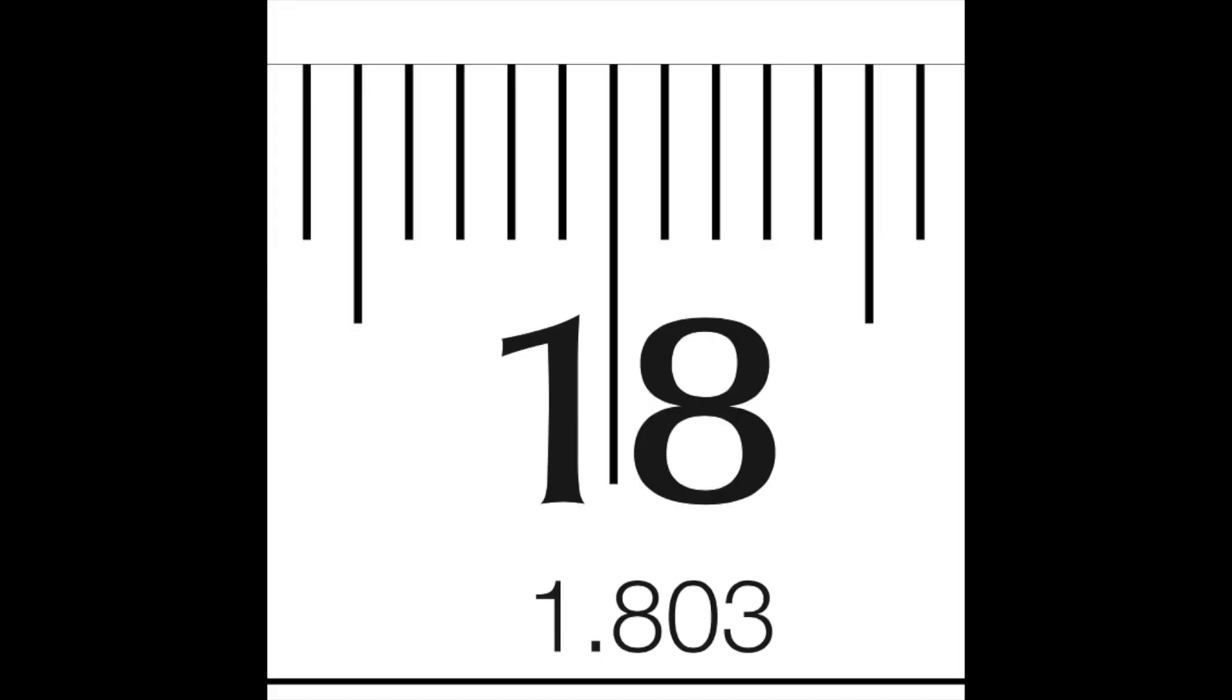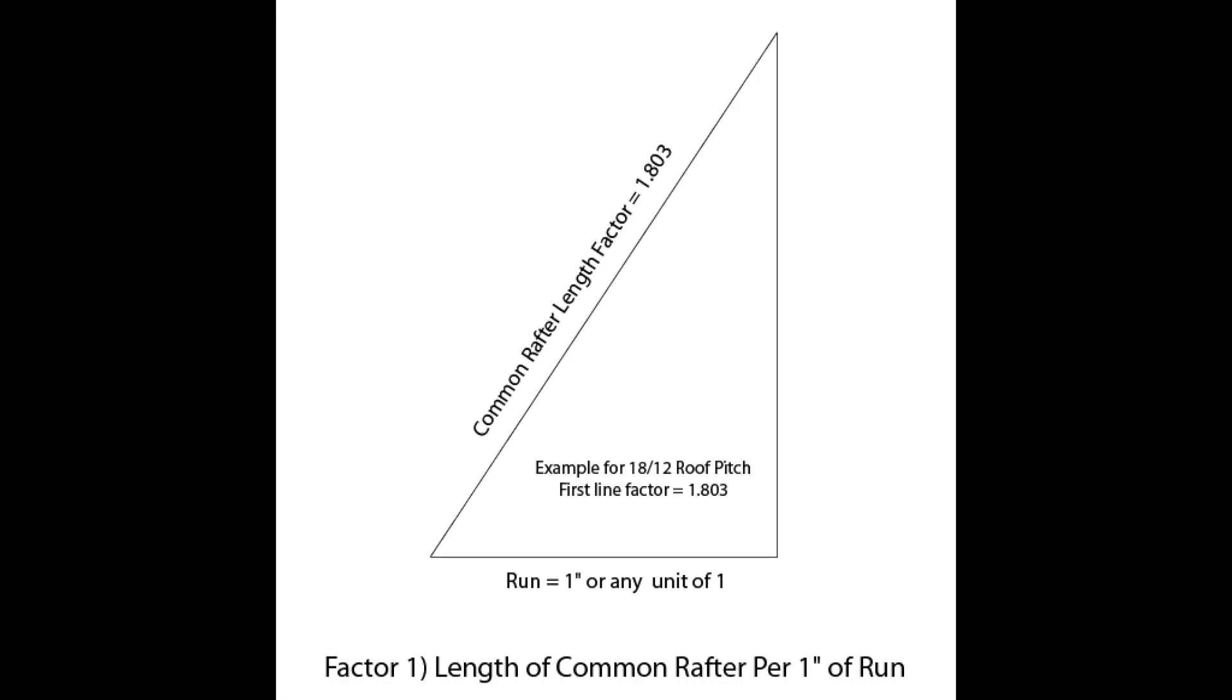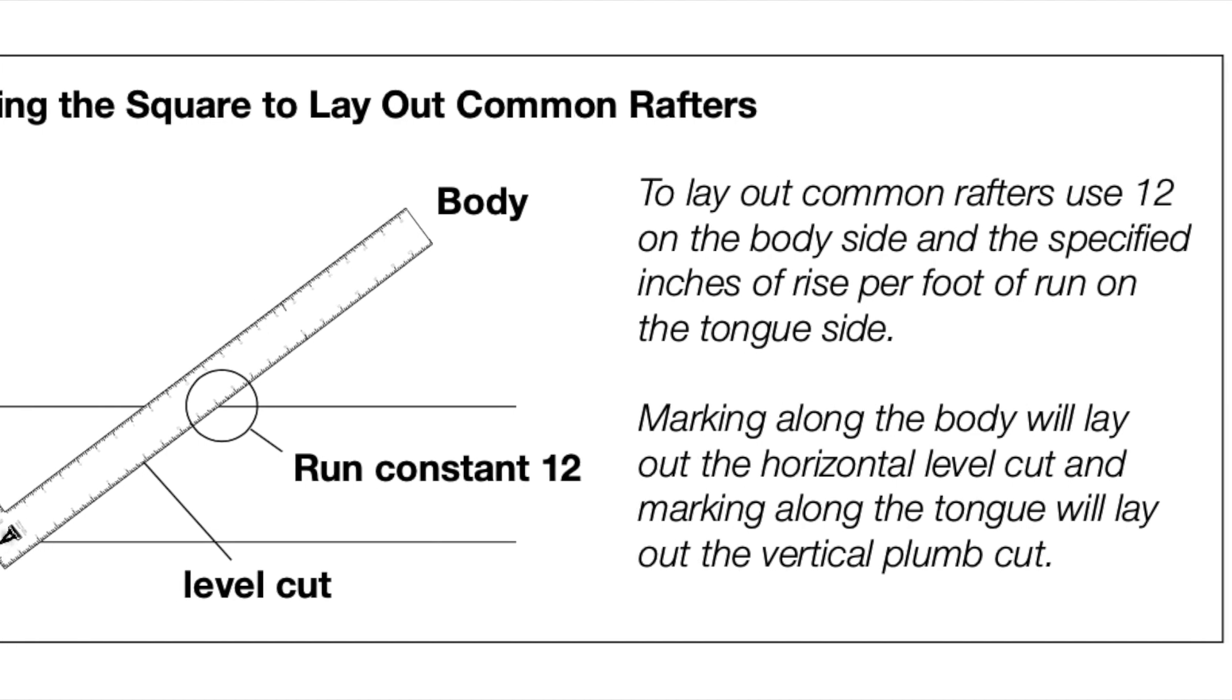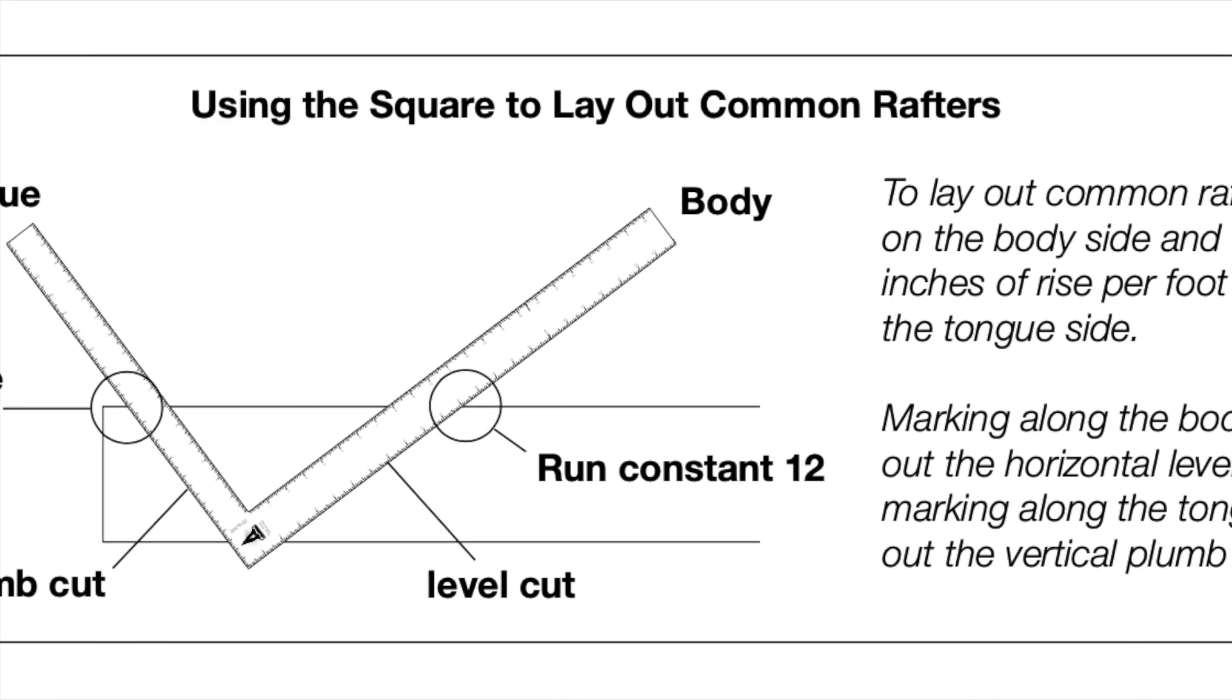As an example, under the number 18 we find the value listed to be 1.803. The number 18 corresponds to a roof pitch of 18 over 12, being 18 inches of rise for every 12 inches of run. The value in this row specifies the ratio of the rafter run to the rafter length. In the example of an 18 over 12 pitch, this ratio is a constant of 1 to 1.803. This ratio remains true for any conceivable span or rafter run, so long as the common rafter pitch is 18 over 12.